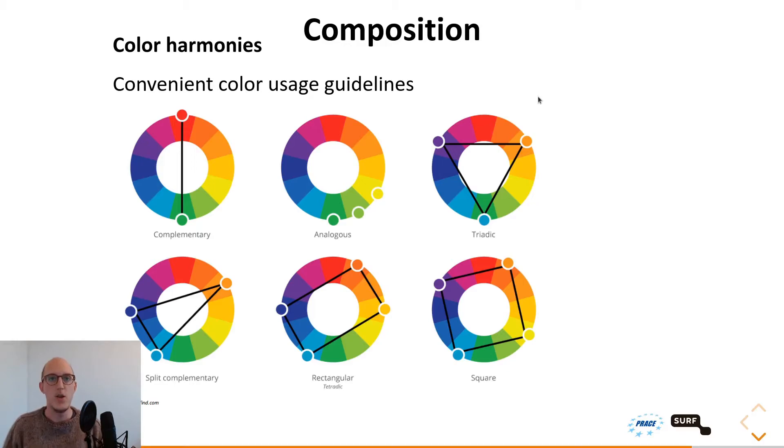One way to have a correct use of colors within your render is to use color harmonies. These are convenient color usage guidelines within your compositions. You don't strictly have to use these, but these are generally pleasing to look at. The first one is the complementary color harmony. This color harmony is the most used and is chosen a lot because it gives a pleasing contrast in your image. It chooses two colors, both of the opposite side of the spectrum. For example, in this case, warm and cold. It's a natural thing that goes on in nature, and that's why it's a pleasing color harmony. And it's used a lot in movies as well, for example, especially this orange and teal color harmony.